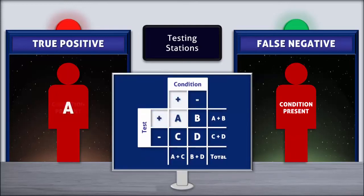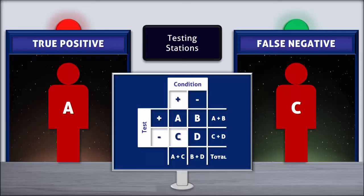On a 2x2 sample table, a true positive is shown as the combination of condition present, test positive, and is represented by the letter A. And the false negative is shown as the combination of condition present, test negative, and is represented by the letter C.